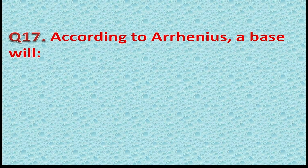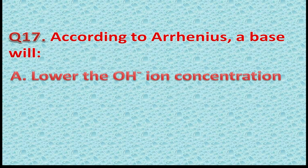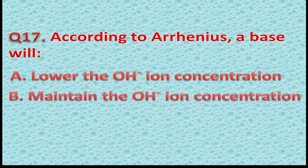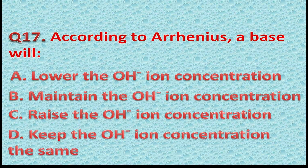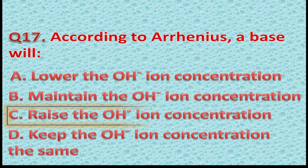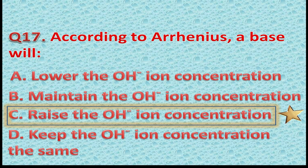Question 17: According to Arrhenius, a base will — Option A: Lower the OH- ion concentration. Option B: Maintain the hydroxyl ion concentration. Option C: Raise the OH- or hydroxyl ion concentration. Option D: Keep the hydroxyl ion concentration the same. The correct answer is Option C — Raise the hydroxyl ion concentration. If you gave this answer, you got one point.